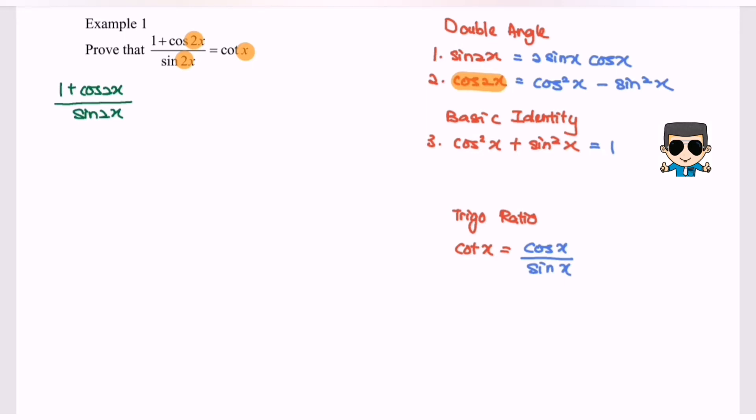So we have equals 1 plus cos squared x minus sine squared x. Next I'm going to refer to the formula again for double angle. We have sin 2x which equals 2 sin x cos x.